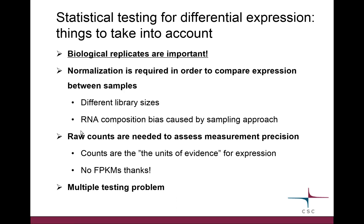The whole point is that we have experimental groups and we want to figure out which genes differ in the level of expression between those groups. If you remember nothing else from this course, the one thing I want you to remember is that it is very, very important that you have biological replicate samples — not just one sample per group, but several, at least three samples per each group.